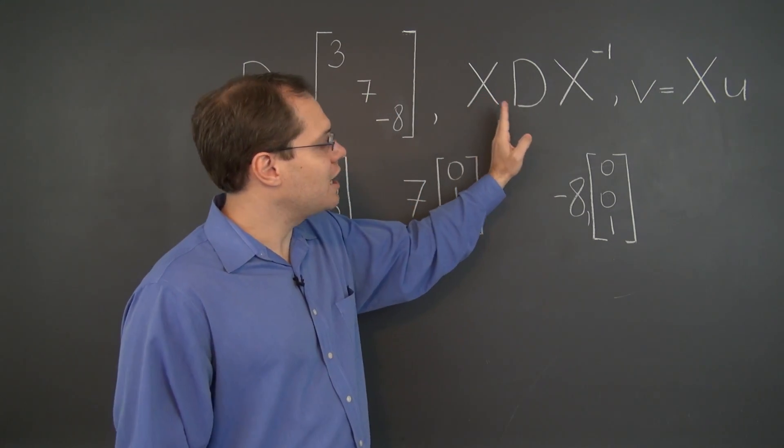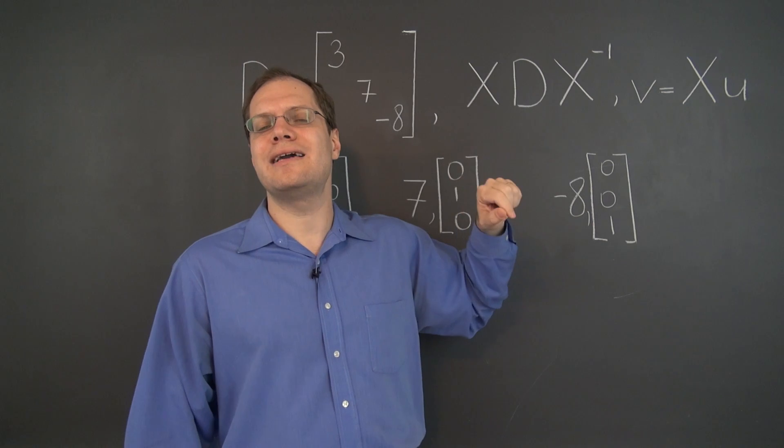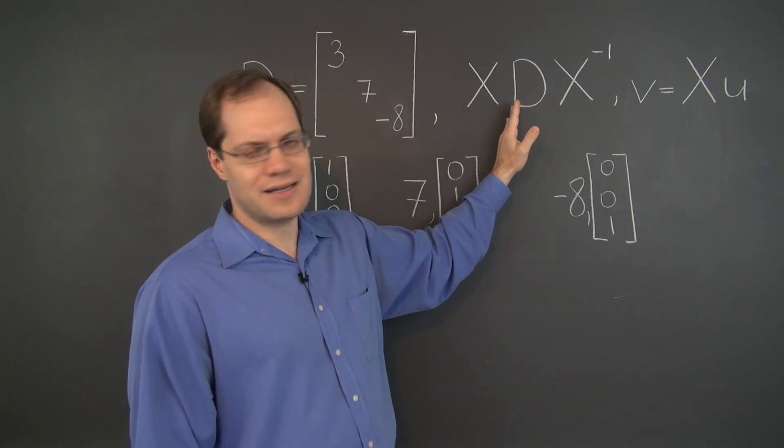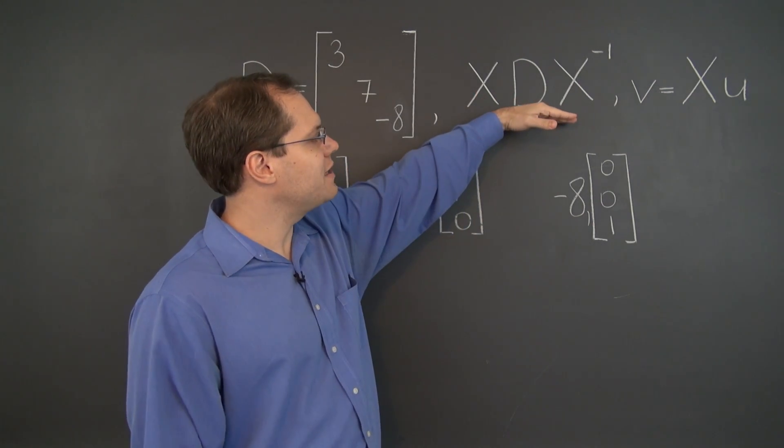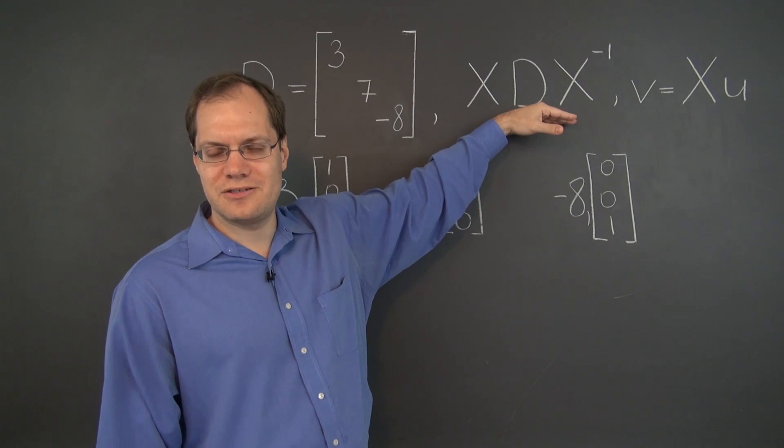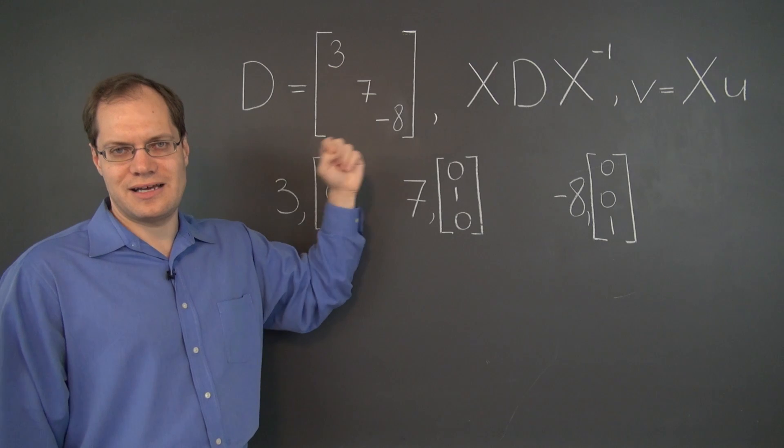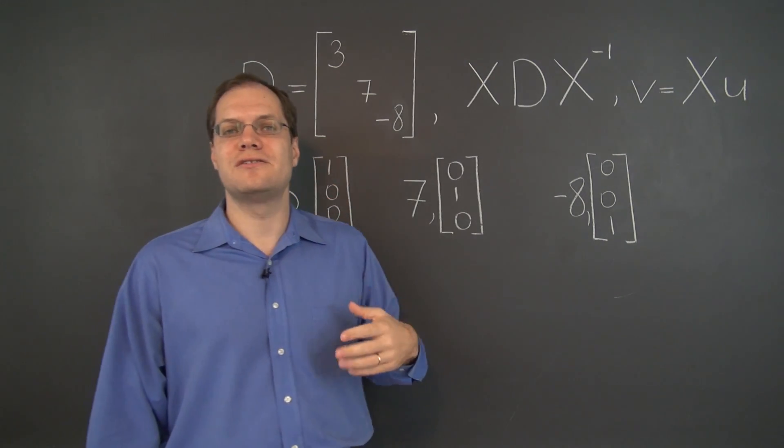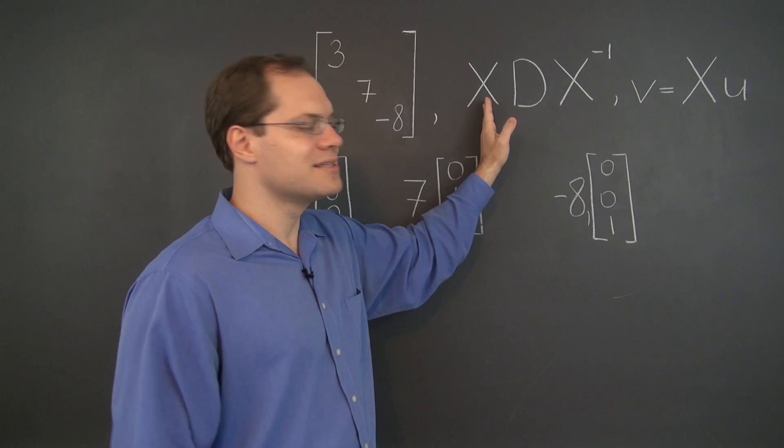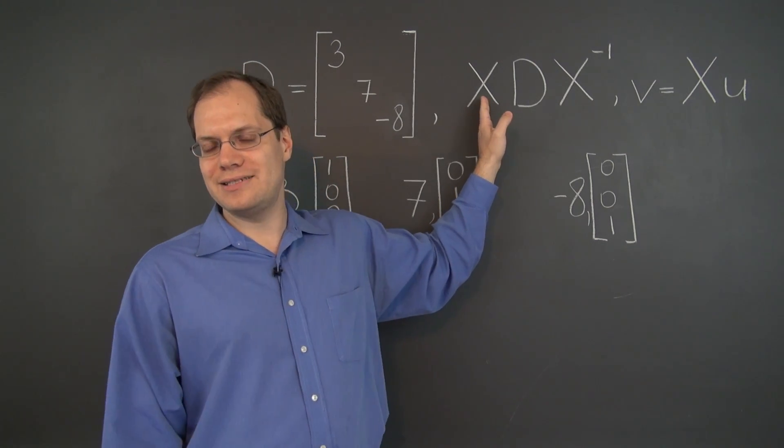So as long as we put our eigenvectors, our target eigenvectors, as columns of X, and evaluate this similarity transformation, we'll have a matrix with prescribed eigenvalues, because the eigenvalues are the same, and the eigenvectors will be the columns of the matrix X, exactly what we pre-planted there. And that will produce the matrix with desired eigenvalues and desired eigenvectors.